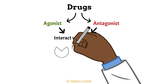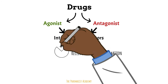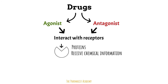Receptors are simply proteins that receive chemical information, usually located on the surface of cells. Anything that binds and interacts with the receptor and its active site is a ligand or a substrate. After the interaction, things happen within the cell, which will normally lead to a response.